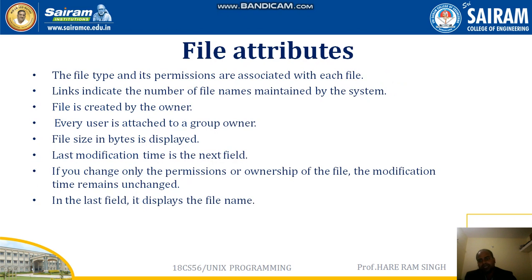Let us study these in a little detail. The first attribute is file type. The file type and its permissions are associated with each file. File type is whether it is a regular file, a text file, or a directory. Permissions are read permission, write permission, or execute permission. Links indicate the number of file names maintained by the system — one file can have different names maintained by the Unix operating system. So links indicate how many different names exist for the same file in the Unix operating system.